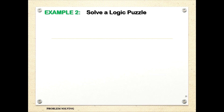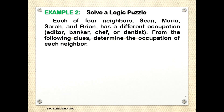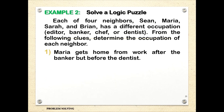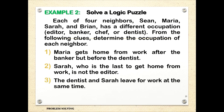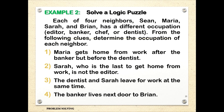Example 2: Solving a logic puzzle. Each of four neighbors — Sian, Maria, Sarah, and Brian — has a different occupation: editor, banker, chef, or dentist. From the following clues, determine the occupation of each neighbor. Clue 1: Maria gets home from work after the banker but before the dentist. Clue 2: Sarah, who is the last to get home from work, is not the editor. Clue 3: the dentist and Sarah leave for work at the same time. Clue 4: the banker lives next door to Brian.